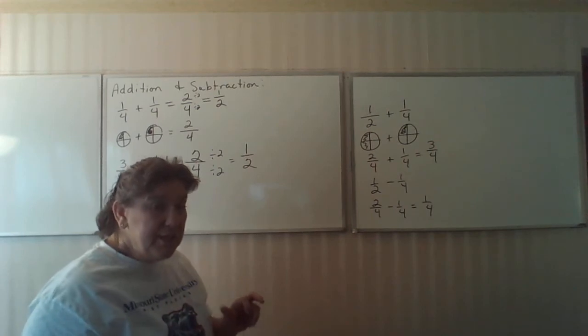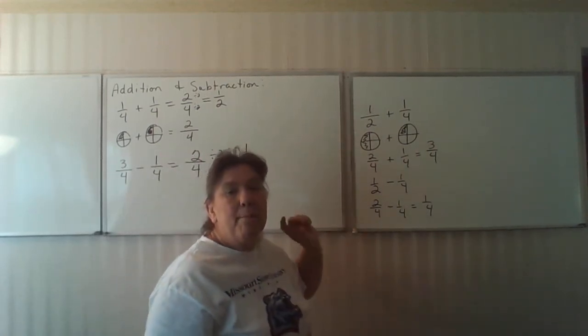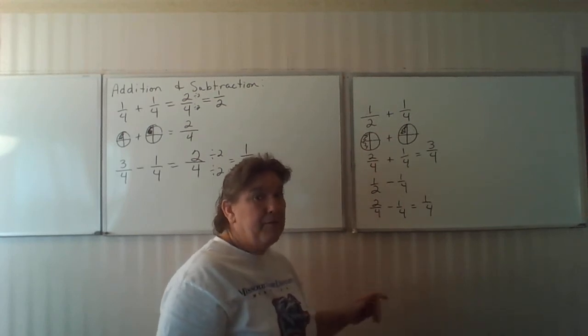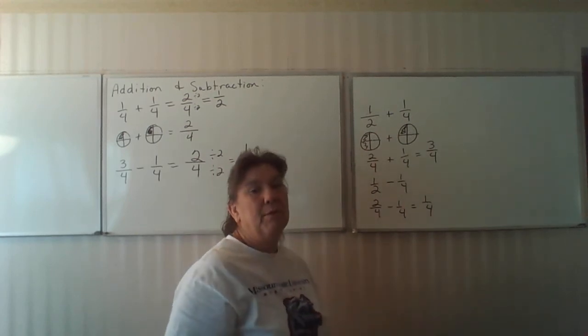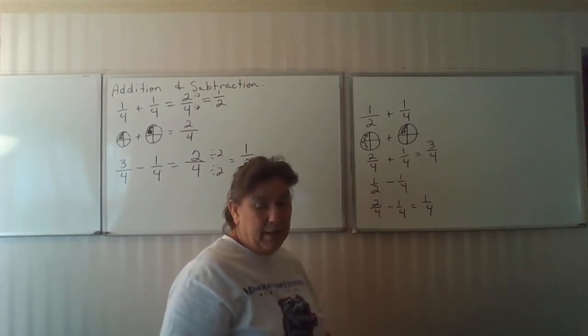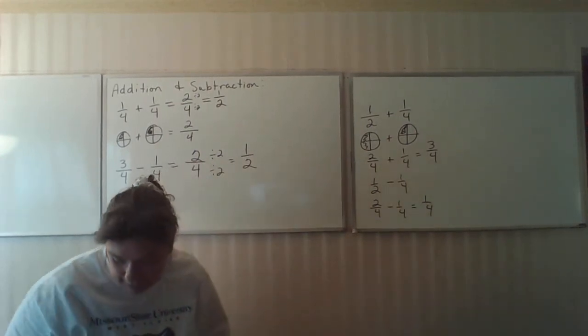The same thing would be true with a subtraction. One half minus one fourth, again, two fourths minus one fourth is equal to one fourth. So addition and subtraction, your denominators must be the same. If they are not the same, you cannot add or subtract them.